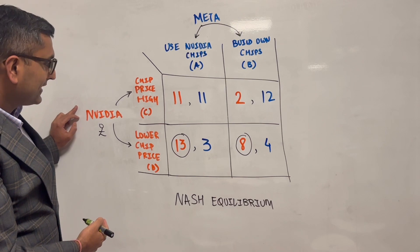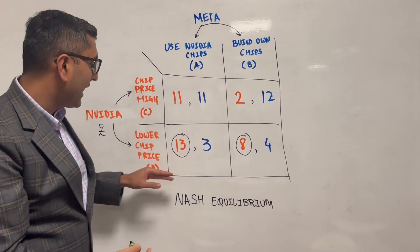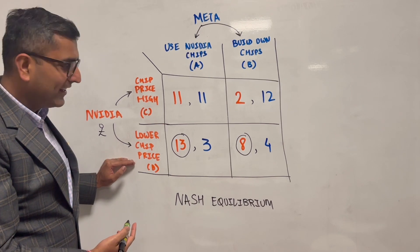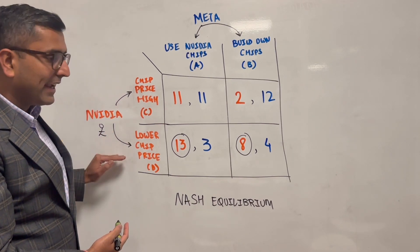So what happened here? Nvidia has a clear call. It's like, independent of what Meta does, I'm going to go with choice D, which is to reduce my prices. So Nvidia did this calculation.